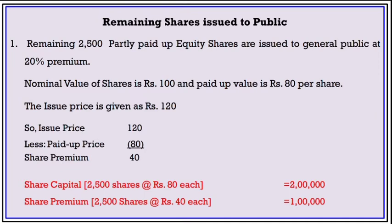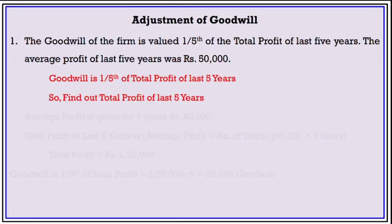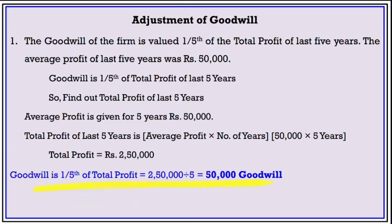Adjustment of goodwill: Goodwill of the firm is valued at one-fifth of the total profit of the last 5 years. Find out total profit for the last 5 years. Average profit for the last 5 years is 50,000, so total profit is 50,000 multiplied by 5, which equals 2,50,000. Goodwill is one-fifth of 2,50,000, which comes to 50,000. So the value of goodwill is Rs. 50,000, to be included while calculating net assets.